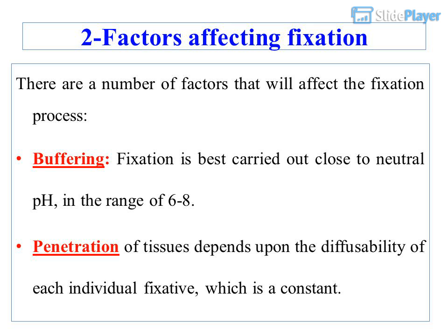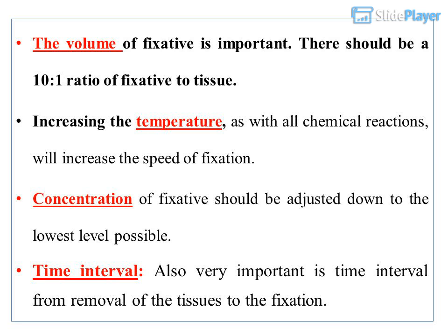Factors affecting fixation: There are a number of factors that will affect the fixation process. Buffering: fixation is best carried out close to neutral pH, in the range of 6 to 8. Penetration of tissues depends upon the diffusibility of each individual fixative, which is a constant. The volume of fixative is important; there should be a 10 to 1 ratio of fixative to tissue. Increasing the temperature, as with all chemical reactions, will increase the speed of fixation. Concentration of fixative should be adjusted to the lowest level possible. Time interval from removal of the tissues to fixation is also very important.